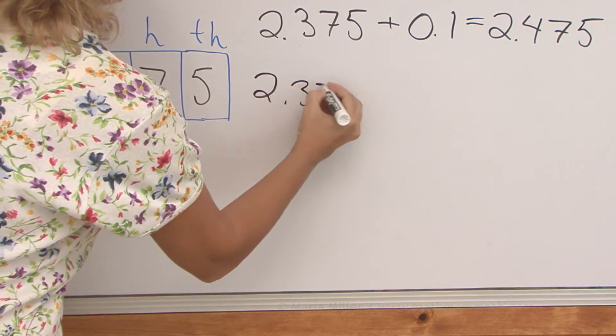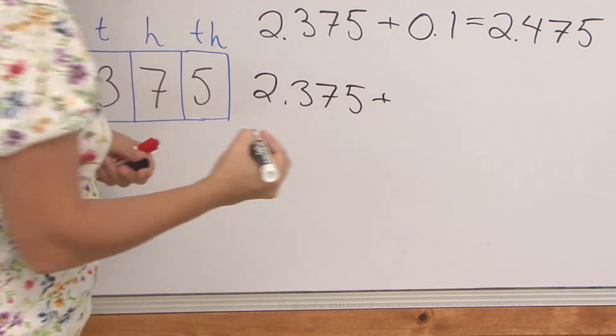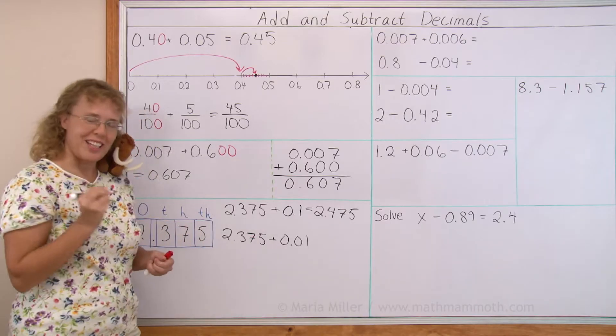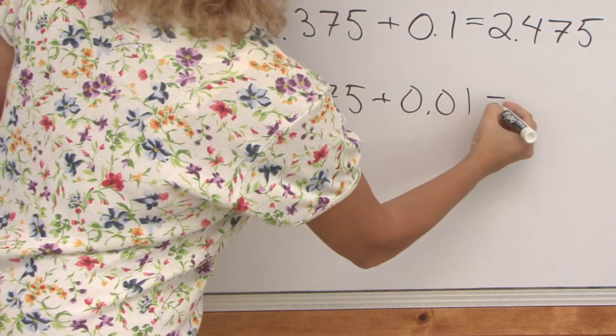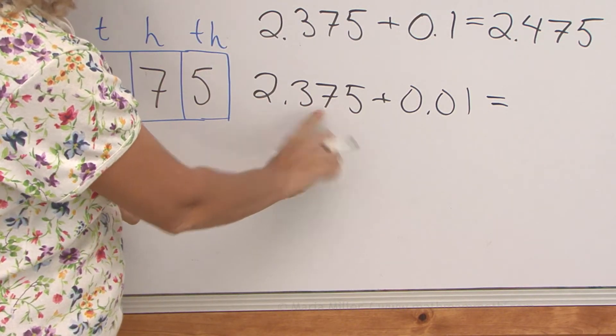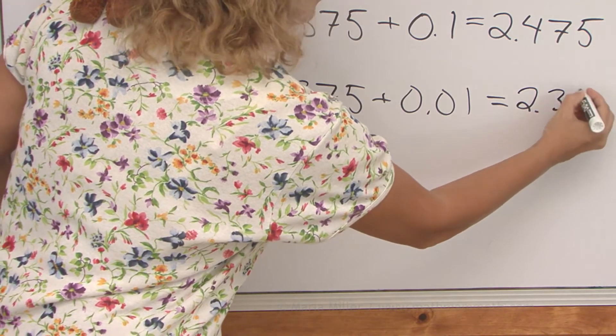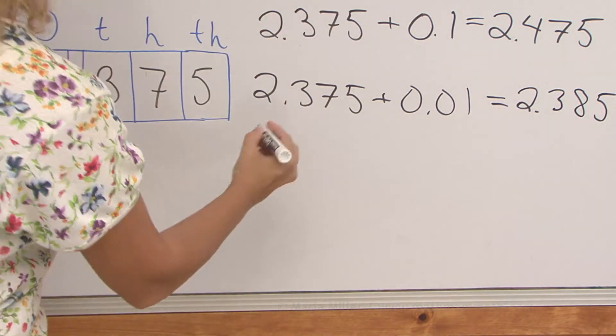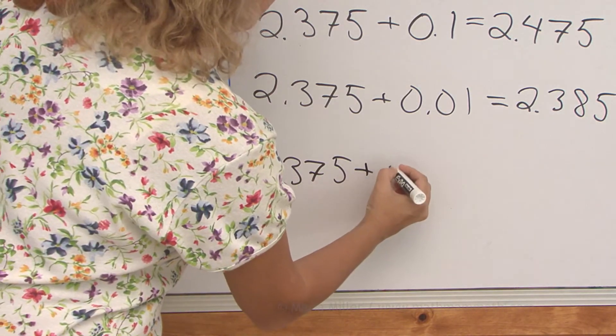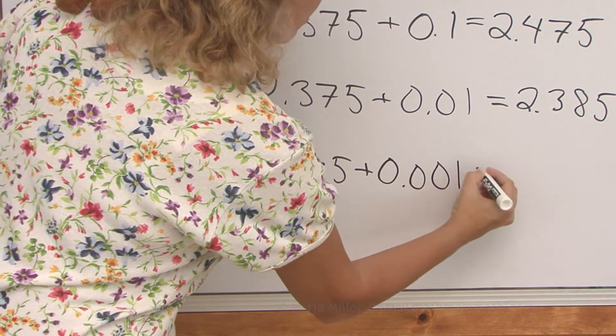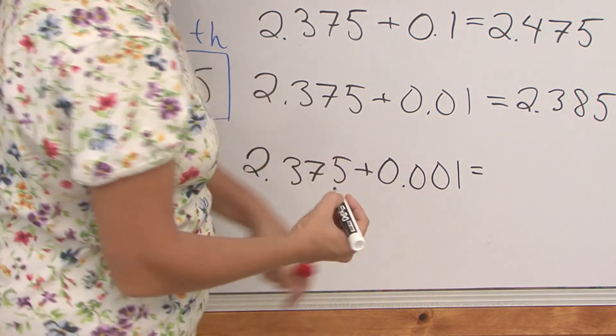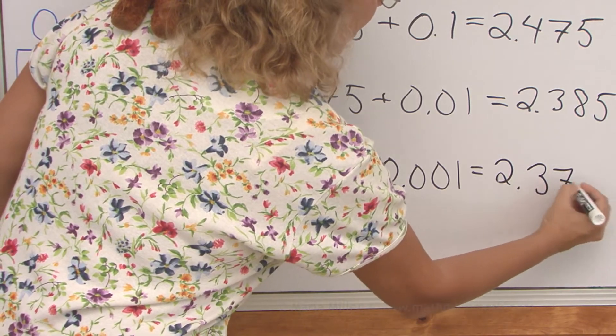Next one: take the same number and add one hundredth. First, what do you get? You add the hundredth to the hundredths digit. So we get 2.385. And last one: take the same number and add a thousandth. And now we indeed add 5 and 1 and we get 2.376.